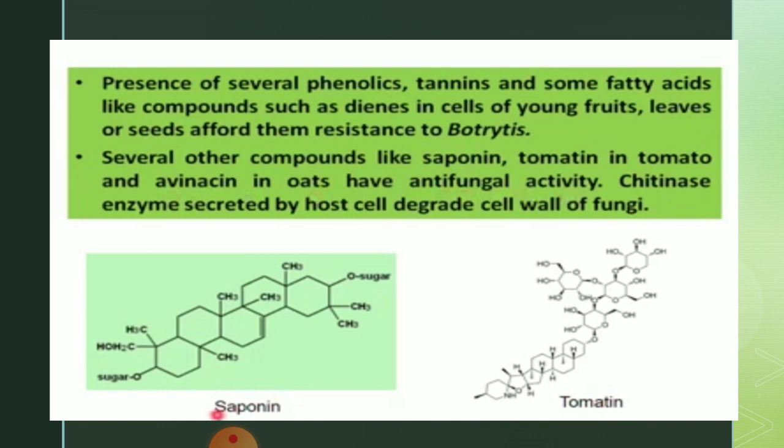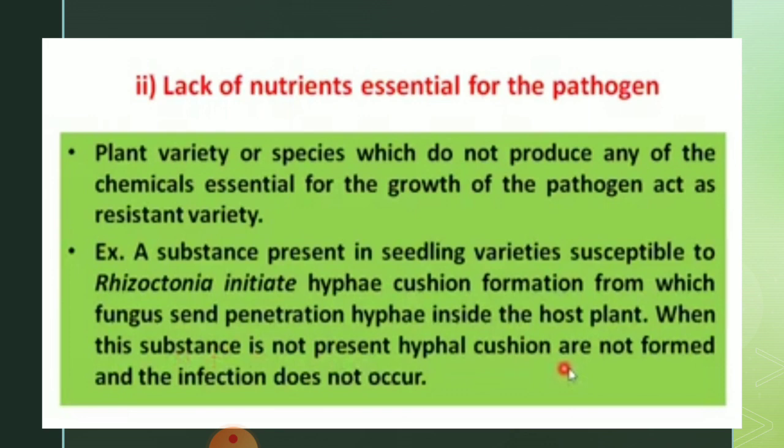This is the saponin structure and this is tomatine. Lack of nutrients essential for the pathogen is another mechanism. Plant varieties or species which do not produce any of the chemicals essential for the growth of the pathogen act as resistant varieties.